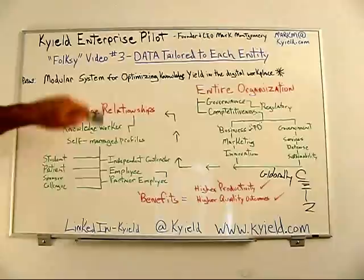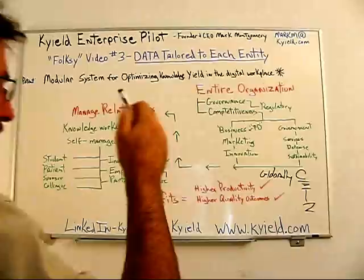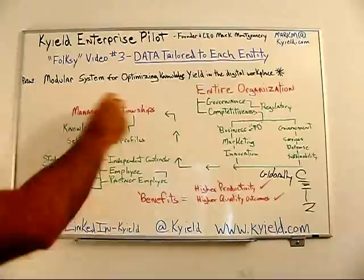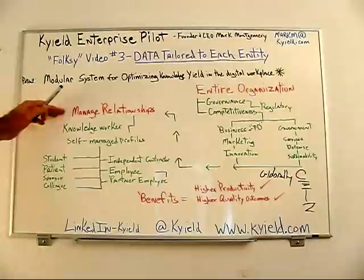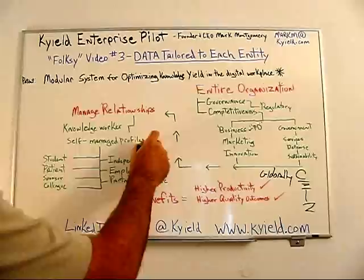What we've done is looked at how you organize your systems — really, it's about the data. We set up adaptive data in our design focused on running your organization in a network environment, rather than in the interests of entrenched incumbents. This allows you to manage your relationships. The adaptive data management actually requires it as part of the system, and each one of us are knowledge workers in the system. It's based on self-managed profiles.